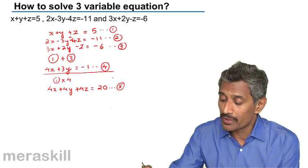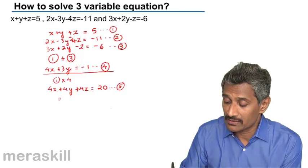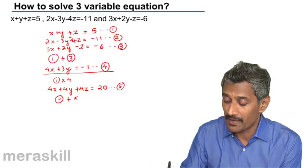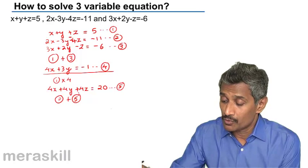If you compare equations 2 and 5, if you add the two, the minus 4z will get cancelled and you get equation 2 plus 5.